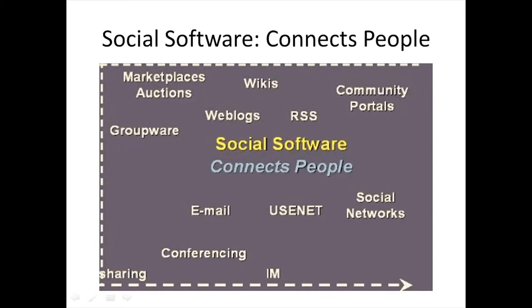Other key features of Web 2.0 according to Wikipedia include: number one, a folksonomy — that is, a free classification of information; number two, rich user information; number three, user as contributor; and number four, a long tail — an economic reference that talks about a far wider array of goods available through web-based retailers, which puts pressure on bricks-and-mortar establishments. The implications for education include online courses, their impact on schools, and open educational resources as compared to traditional publishing.